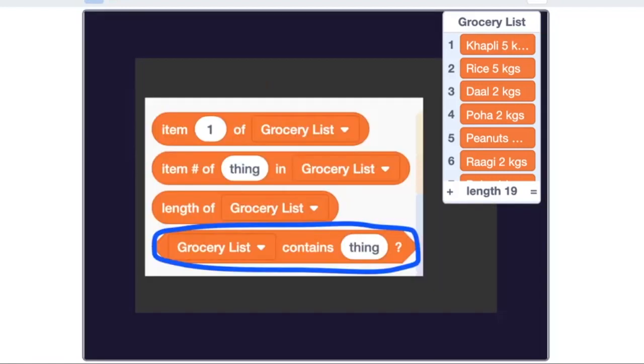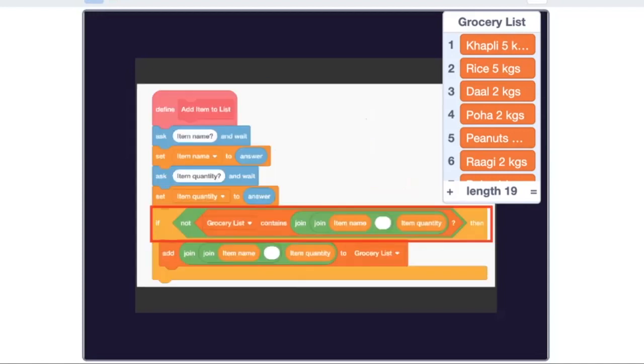Look at this block. List contains thing. Use this to check if it contains our new item to be added. We have to add the item if not on the list. Make use of the not operator. Else we do nothing. So it does not get added again.